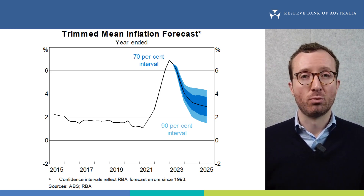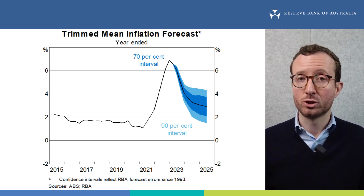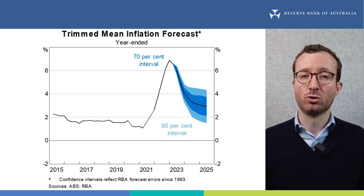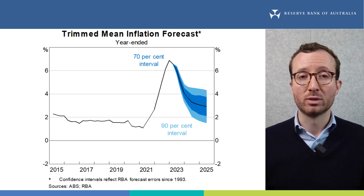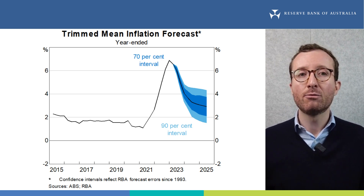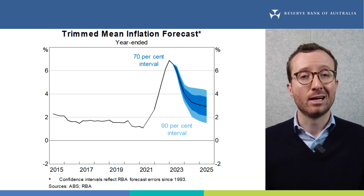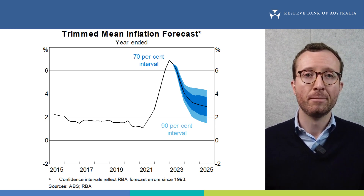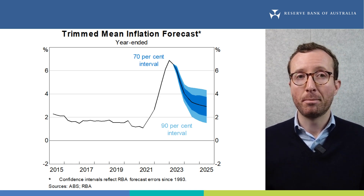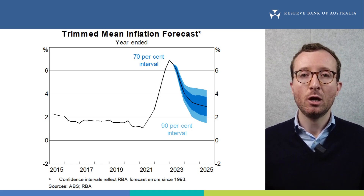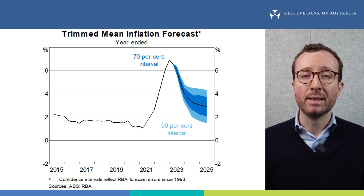These measures remove the effect of irregular or temporary price changes. One measure of this is trimmed mean inflation. In this graph, we can see that trimmed mean inflation was 6.6% over the year, down from almost 7% in the December quarter — the highest annual rate since 1988. Looking forward, inflation is expected to return to the bank's 2–3% target range, but it will take some time. The bank expects underlying inflation to decline over the coming years to be around the top of the inflation target range by mid-2025.